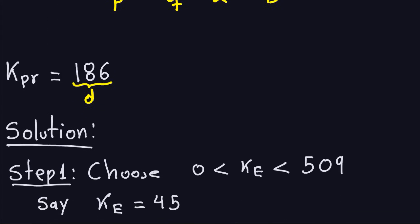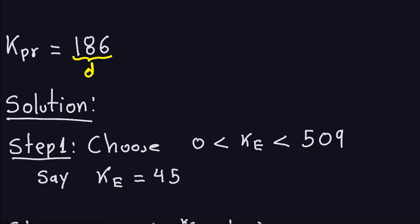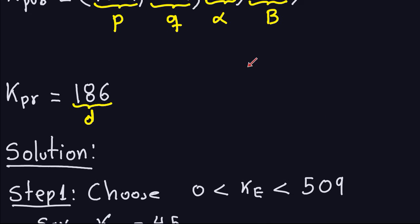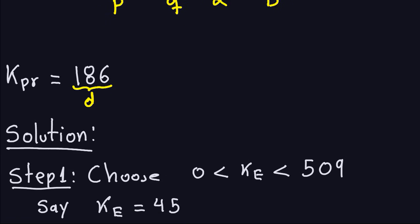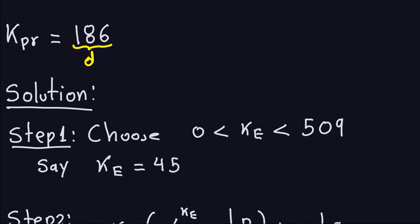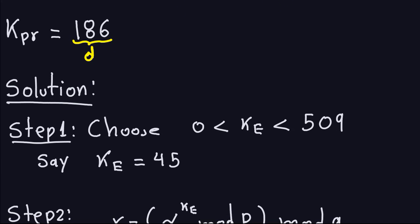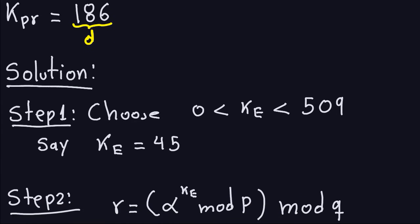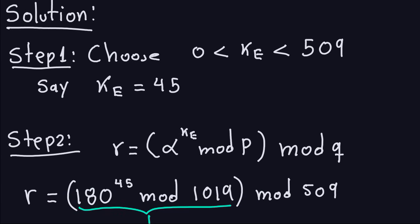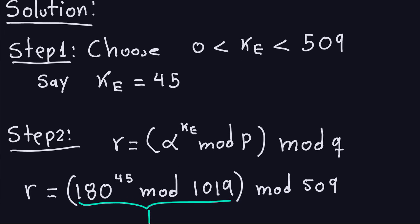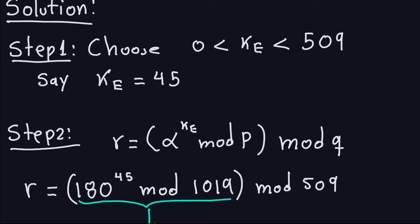Step one: choose the ephemeral key — any number between 0 and Q. In our case Q is 509, so we choose, for example, 45. That's a random number. Then step two computes the modular exponentiation that gives us part of the signature, which is R.